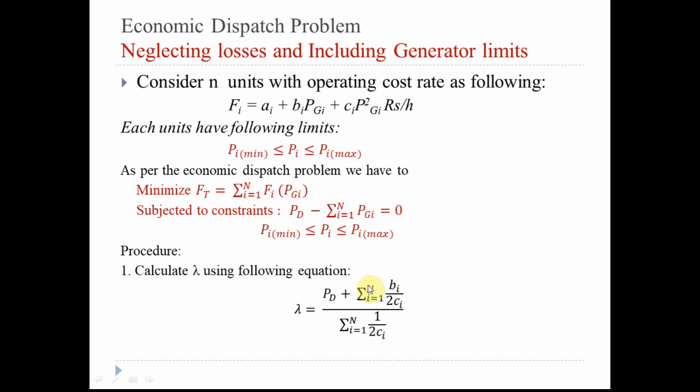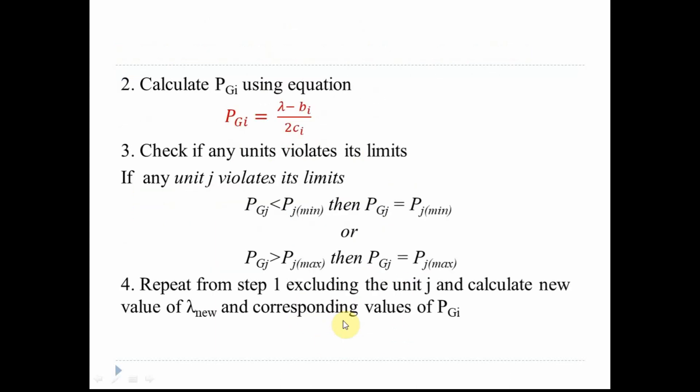The first step follows the same procedure as before. For the given data, we calculate the lambda value using the appropriate formula. Once we have the lambda value, for each generating unit we calculate the output generation PGI. This process of calculating lambda and PGI was covered in the previous section.